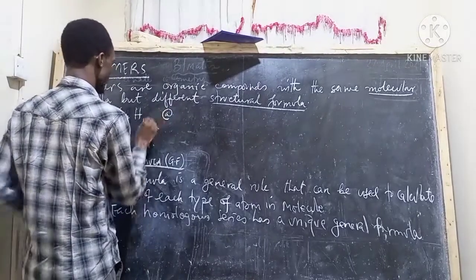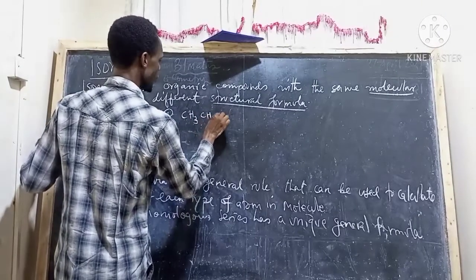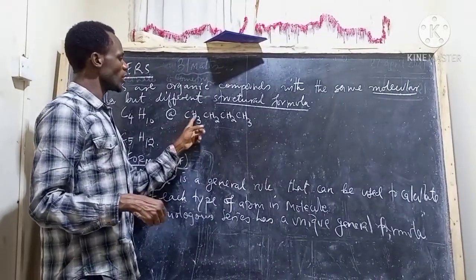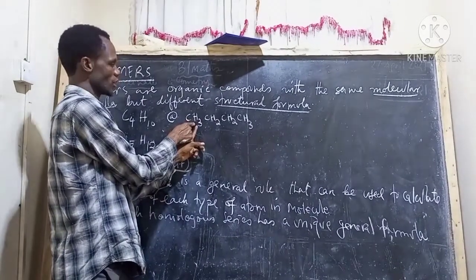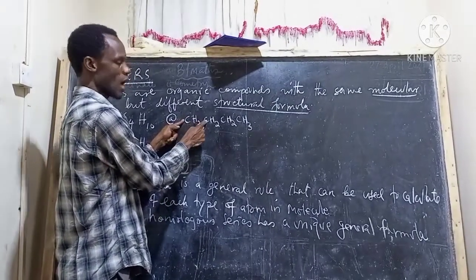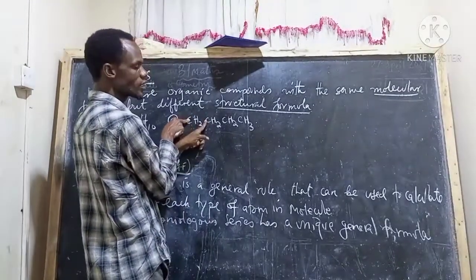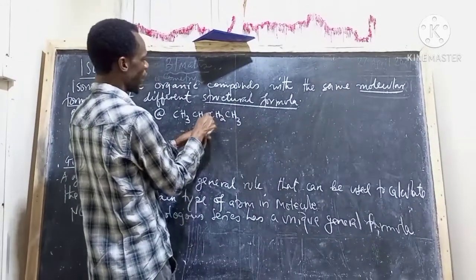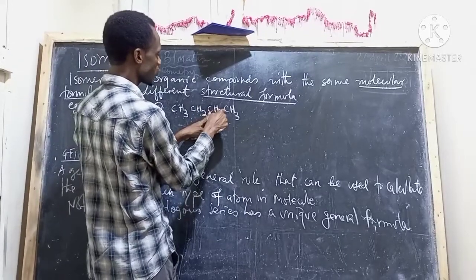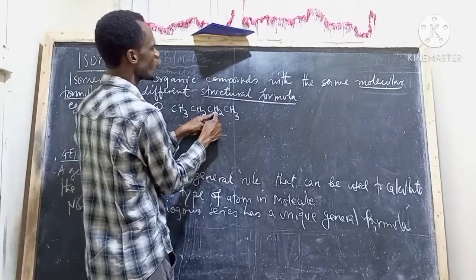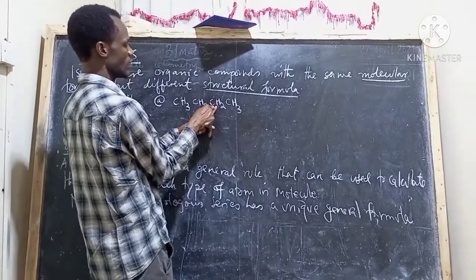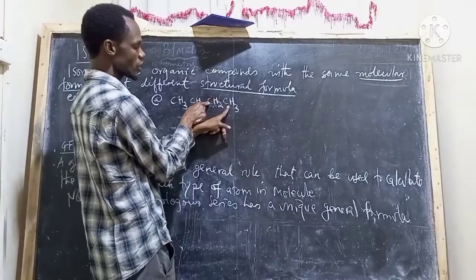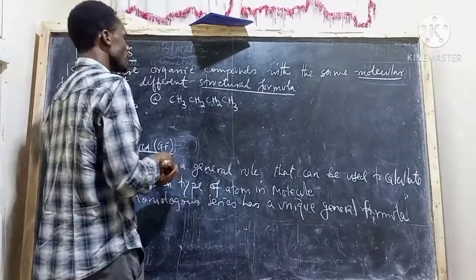The first structural formula (A) is: CH3-CH2-CH2-CH3. We have 10 hydrogens. This carbon has 3 hydrogens because there is one bond joining it to the next carbon. The middle carbons each have 2 hydrogens because one bond is occupied on each side. The end carbon has only one bond joining it, so it has 3 hydrogens — completing the tetravalent property of carbon.